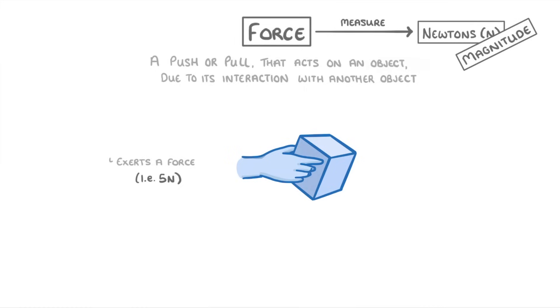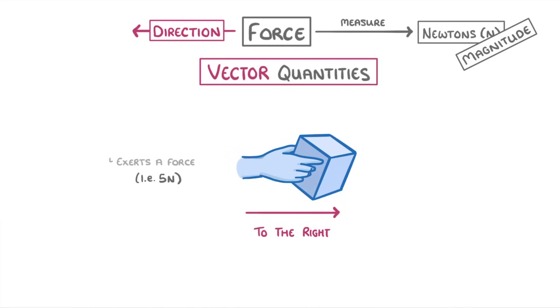As well as this magnitude though, which we're measuring in newtons, forces also have direction. So we could say that this force is acting to the right. This means that forces are classed as vector quantities, because they have both magnitude and direction.